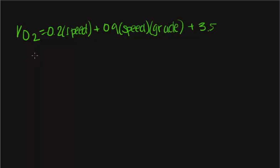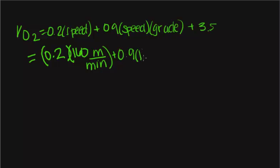Given the equation from the problem, we're going to fill in woman A's speed. So it would be 0.2 times 160 meters per minute plus 0.9 times 160 meters per minute multiplied by 0.02, since she's running up a 2% grade, plus 3.5.